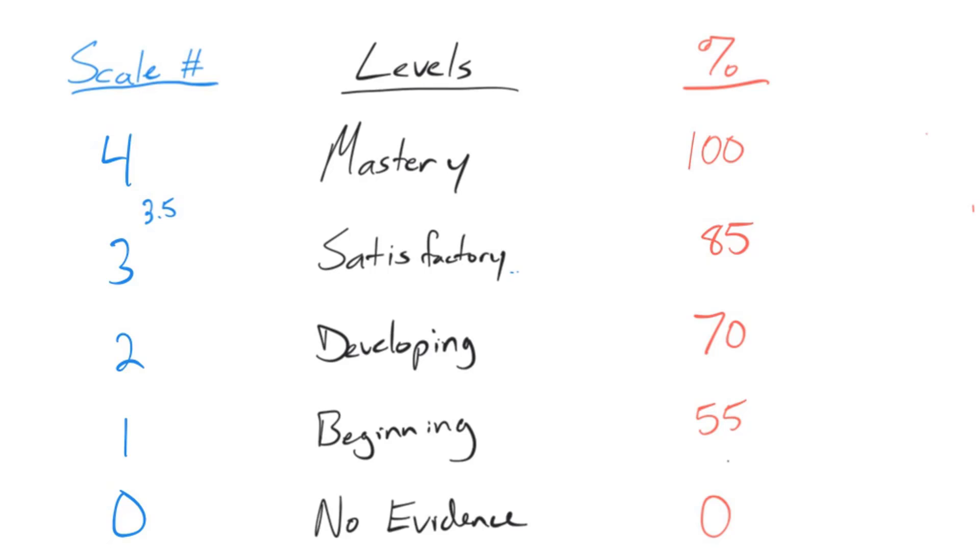Obviously that one's pretty easy. But for a 3 to 85%, if it's a 10-point problem, I'm going to multiply that 10 points times 85%, and they get an 8.5 for that problem. So I'll have to give them that transition.